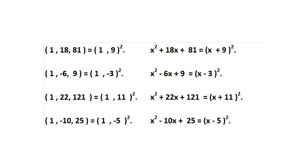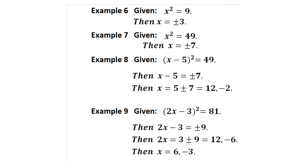Verification using vertical/crisscross multiplication: (x+9)² gives x², 81, and 2×9x = 18x. (x−3)² gives x², 9, and −6x. (x+11)² gives x², 121, and 22x. (x−5)² gives x², 25, and −10x. A quick way to check your completing-the-square answers.